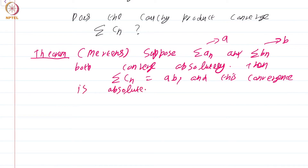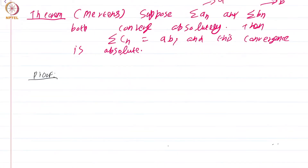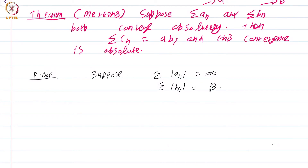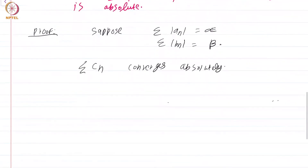Let us see a proof — the proof is not very hard because I am assuming both series converge absolutely. Suppose summation |aₙ| equals α and summation |bₙ| equals β. The aim is to show that summation cₙ converges absolutely — that is the first claim in this theorem. How are we going to show summation cₙ converges absolutely? Observe the following: look at summation |cₙ| from n = 1 to N.